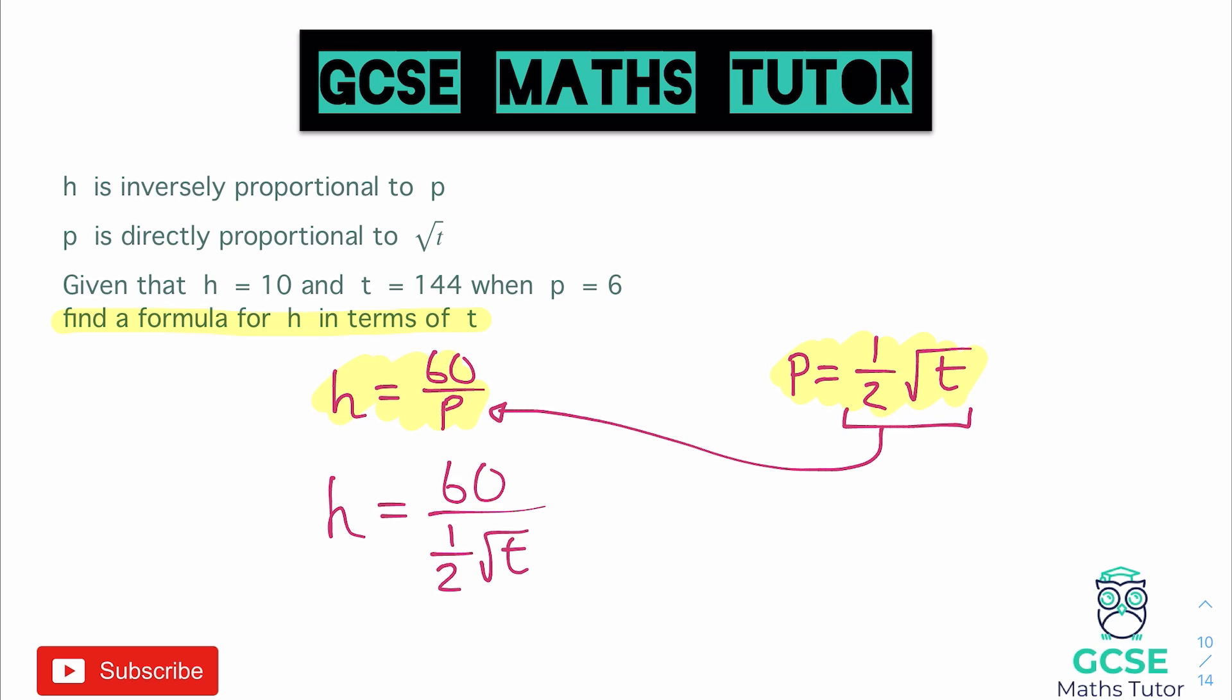There's a couple of different ways to do that. But the easiest way I think in this case is just to multiply the top and the bottom by 2. And that's going to get rid of that half. So if we times the top and bottom by 2 we'll have h is equal, the top becomes 120. The half becomes 1. So we don't need to write 1. We can just write root t. And there we go. We have our final answer. h is equal to 120 divided by root t.